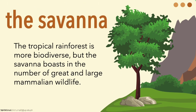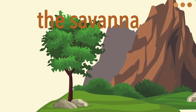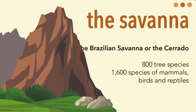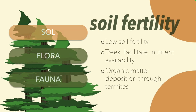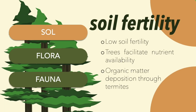The tropical rainforest is more biodiverse, but the savannah boasts in the number of great and large mammalian wildlife. Such an example is the Brazilian savannah or the Cerrado, which is one of the most biodiverse savannahs in the world. It has 800 tree species, 1,600 species of mammals, birds, and reptiles. Now, let's talk about the characteristics of the savannah.